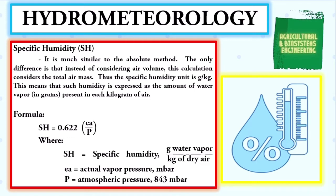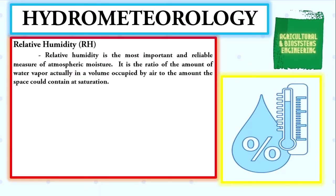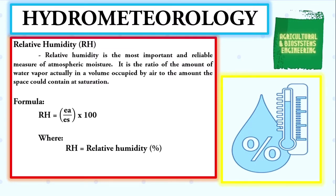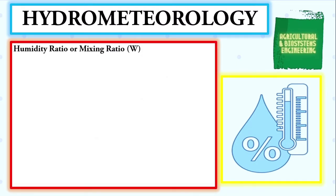Next, relative humidity is the most important and reliable measure of atmospheric moisture. It is the ratio of the amount of water vapor actually in a volume of air to the amount that space could contain at saturation. The formula is: RH = (ea / es) × 100, where RH is expressed in percentage, ea is the actual vapor pressure in millibars, and es is the saturated pressure in millibars.